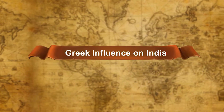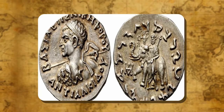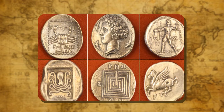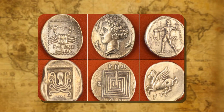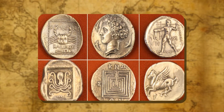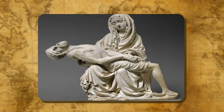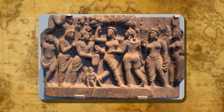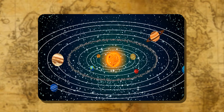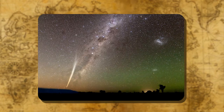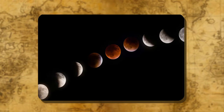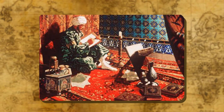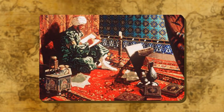Greek influence on India: In coinage, Indians learned from the Greeks how to use moulds and dies to give definite shapes to coins with names and titles of kings. In art and sculpture, the Gandhara School — a new school of art — was the result of Greek influence on Indian art. In astronomy, Indian astronomers compared their knowledge with Greek astronomers and enhanced their knowledge of stars, using it to predict eclipses. The Greek, or Yunani, system of medicine is now accepted by Indian physicians.